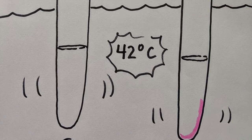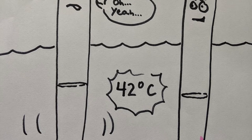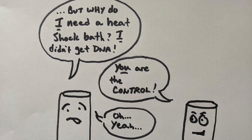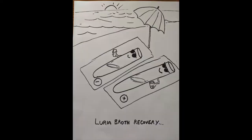Heat shock them for 90 seconds, and then return them to ice. At this point you can hibernate the experiment overnight — put them on ice, keep them in the fridge with lots of ice packed around, and start again the next day. Or if you've got the time, wait 15 minutes and continue. Then remove the bacteria from the ice, add Luria broth, and give them some recovery time.